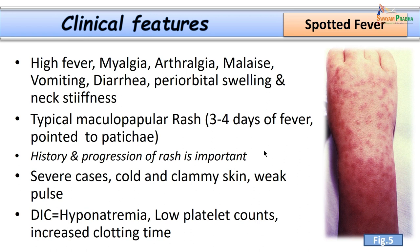The rash goes towards the centre of the body and appears on the trunk. In the typhus group, the rash also spreads centripetally but usually spares the palms and soles. This is the important difference between the spotted fever group and typhus fevers. In severe cases the patient may already be in a state of DIC or circulatory failure when they approach the doctor.